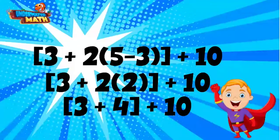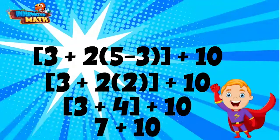Finally, we are left with addition in the brackets. 3 plus 4 equals 7 and our final line without parentheses is 7 plus 10.